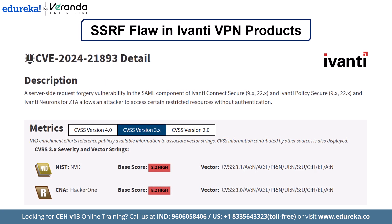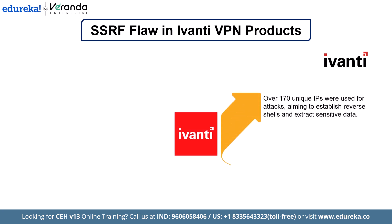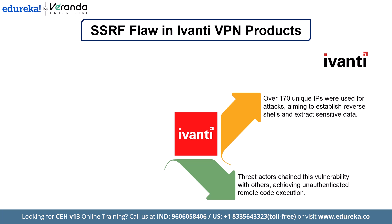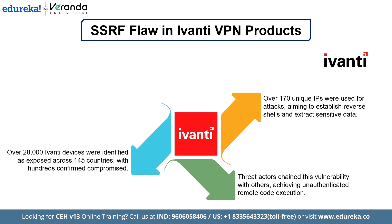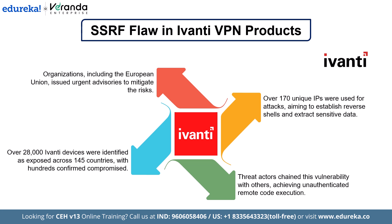Let's look at a real-world example. In early 2024, a critical SSRF vulnerability, CVE-2024-21893, in Ivanti Connect Secure and Policy Secure products was massively exploited. This flaw allowed attackers to bypass authentication and access restricted resources. Over 170 unique IPs were used for attacks aiming to establish reverse shells and extract sensitive data. Threat actors chained this vulnerability with others, achieving unauthenticated remote code execution. Over 28,000 Ivanti devices were identified as exploited across 145 countries, with hundreds confirmed compromised. Organizations including the European Union issued urgent advisories to mitigate the risk, highlighting the massive risk SSRF poses in today's interconnected cloud environments.